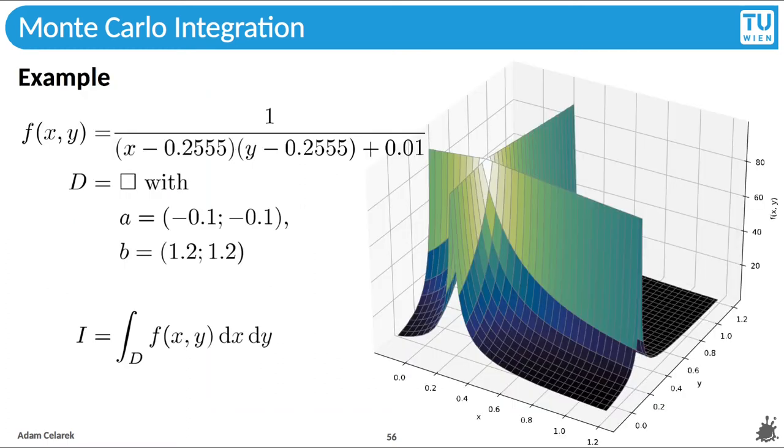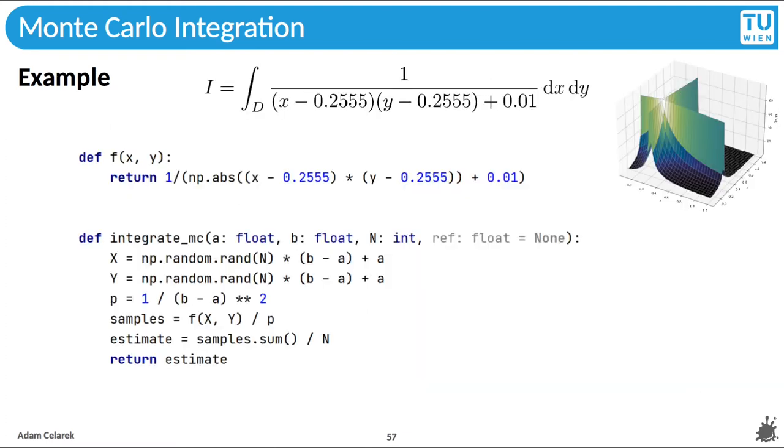Here we go. We are looking at a 2d function. The equation is on the top left. You see a plot of that function on the right. The integration area is a rectangle between minus 1 slash minus 1 and 1.2 slash 1.2, just so its dimensions are not one by one. And we want to integrate it. Here you see an implementation using Python and NumPy. We create uniformly distributed samples between a and b with probability p. Our samples are then computed with f over p and the average is the estimate. That's all.